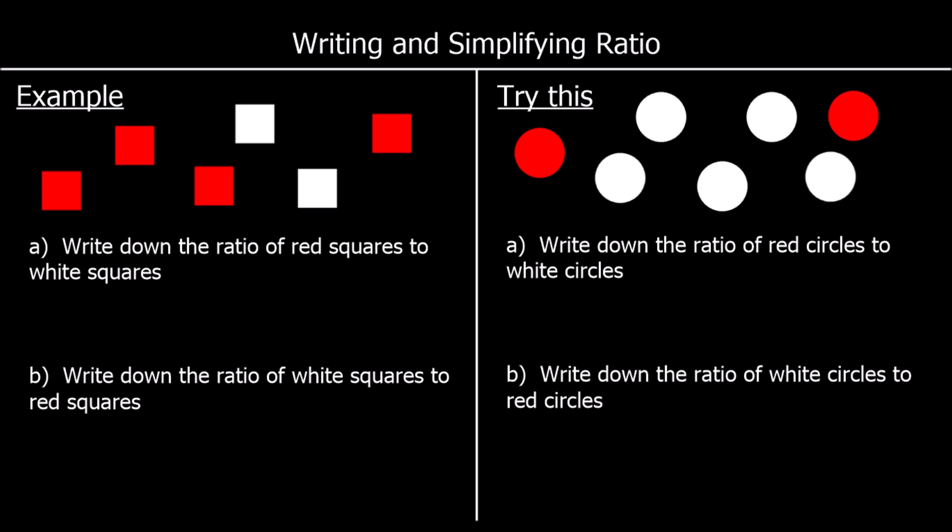We use ratio to compare amounts. In the first example here, we have some red squares and some white squares. The question says write down the ratio of red squares to white squares.